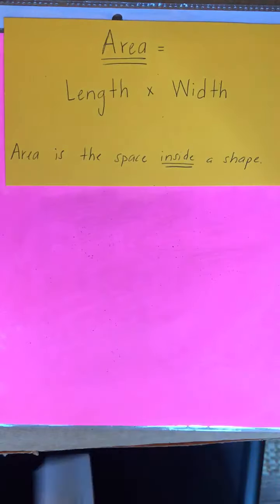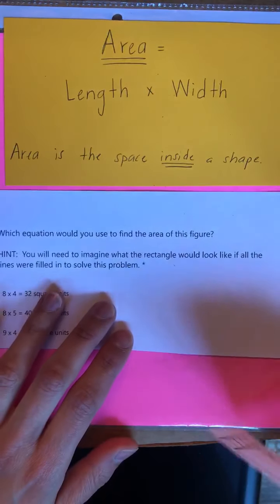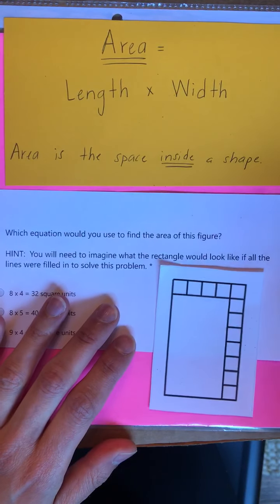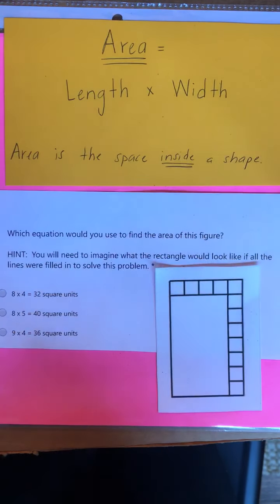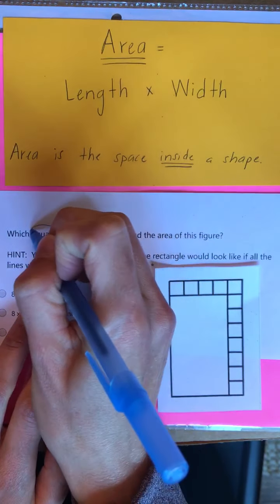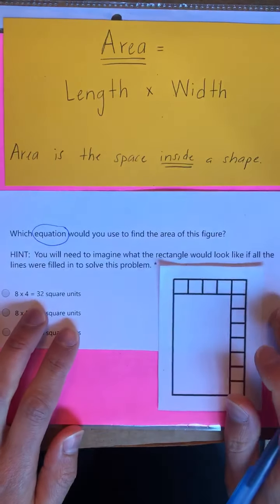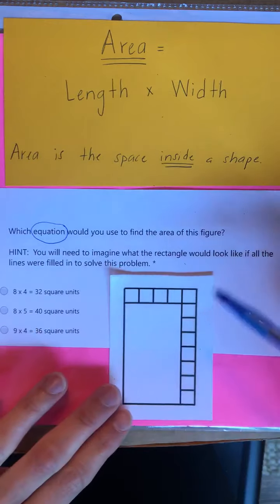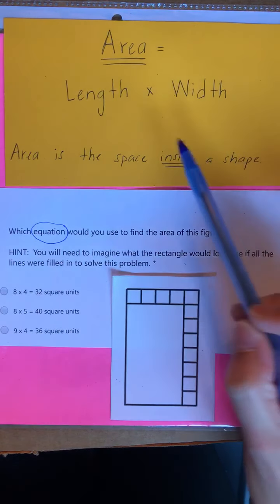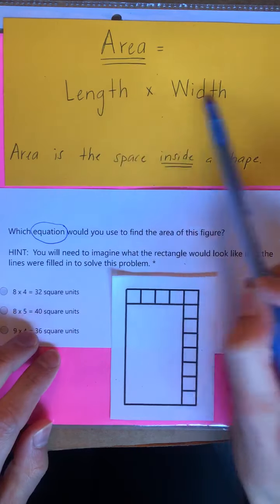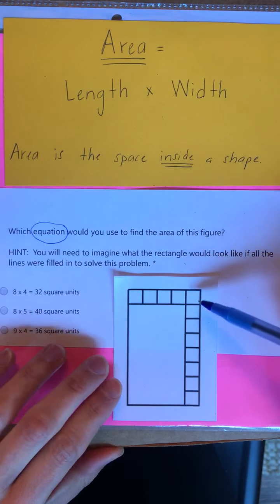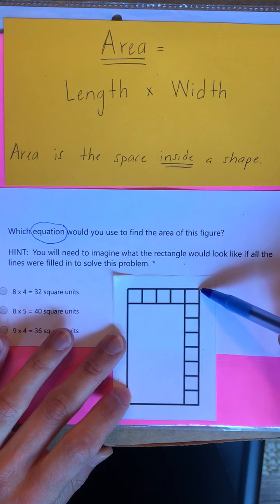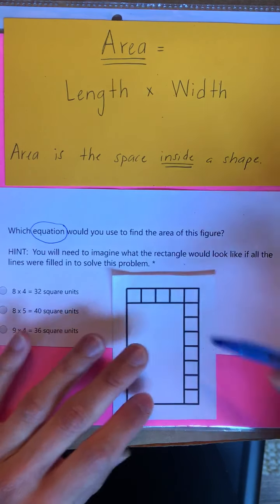Let's take a look at number 2 together. Number 2 says: which equation would you use to find the area of this figure? Remember, an equation is just a different way of saying a number sentence. So because this shape is not completely filled up with squares, we have to use our formula: length times width.